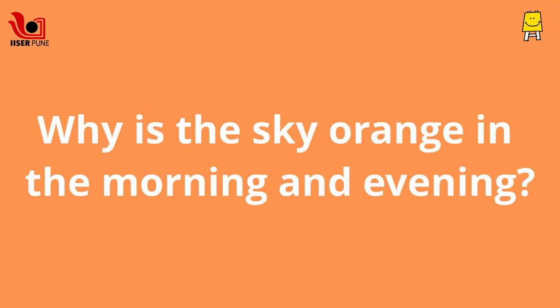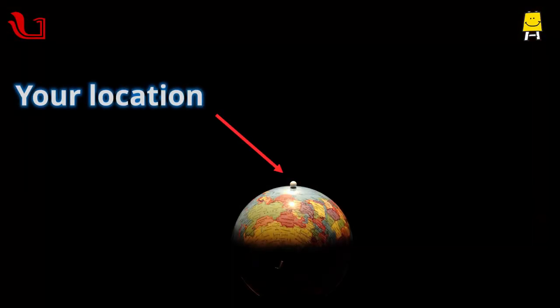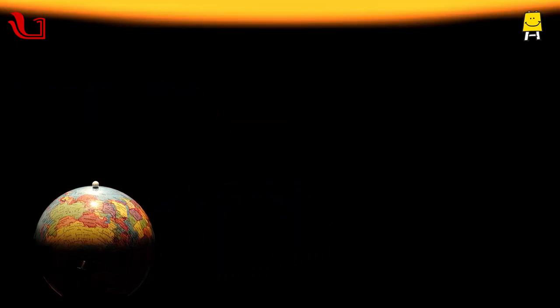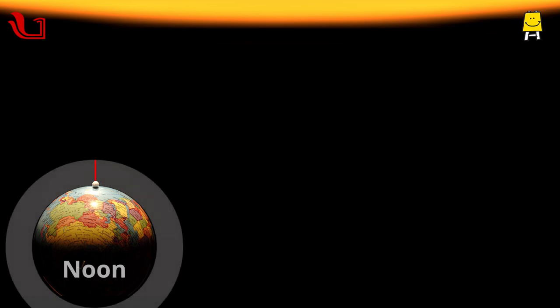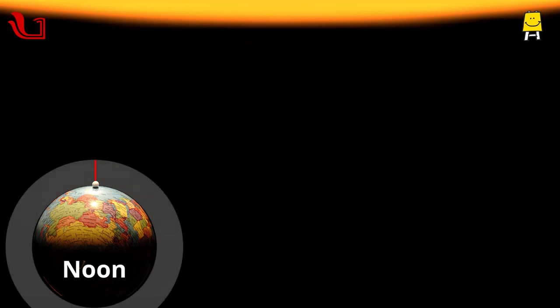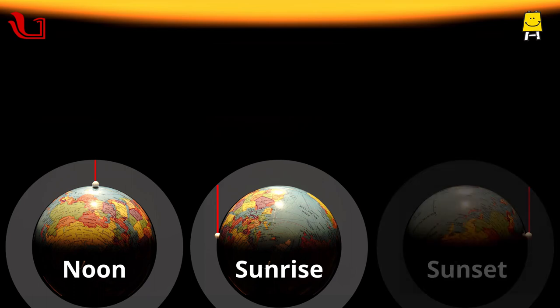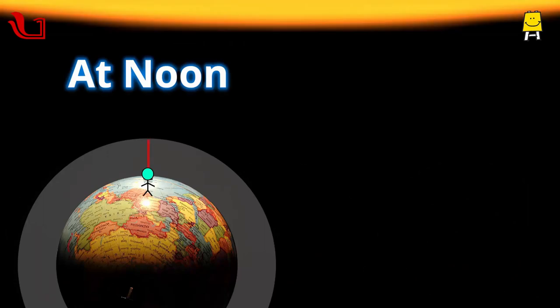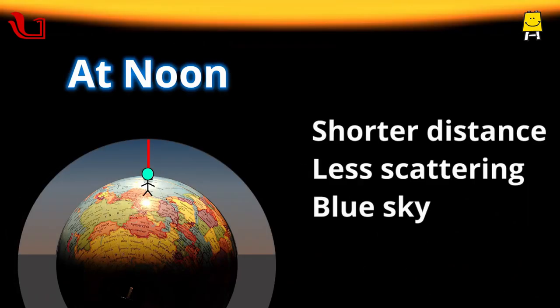But why is the sky red-orange in the morning and evening? For most light hours, the light from the sun travels a shorter distance in the atmosphere than at sunrise and sunset. The blue light gets scattered more than other colors in the atmosphere, and thus the sky appears blue.